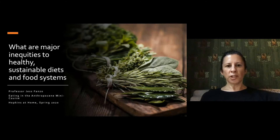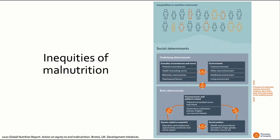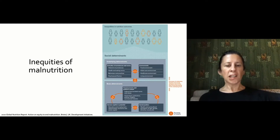What are the major inequities to healthy, sustainable diets and food systems? This is a framework just published by the Global Nutrition Report in 2020, showing the social determinants of nutrition outcomes. Underlying determinants include everyday circumstances and norms people face, material circumstances, health and eating norms, behaviors and practices, and psychosocial factors. Underlying those are environments: the food environment, care environment of children, health environment, and living environment — all of which influence nutrition outcomes and highlight inequities.